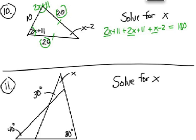2X plus 2X plus X is 5X. 11 plus 11, take away 2, is 20. 5X plus 20 equals 180.